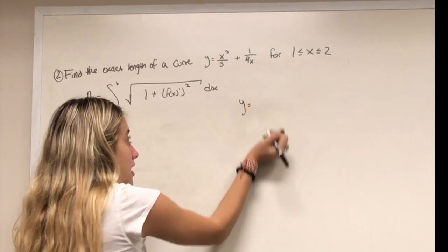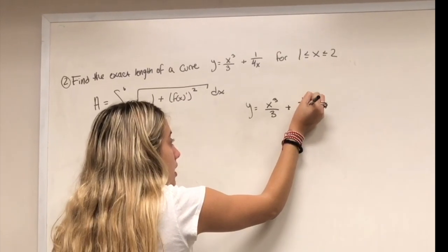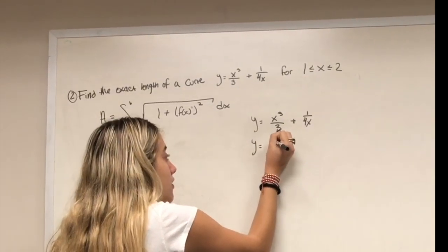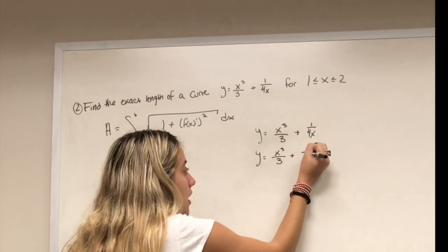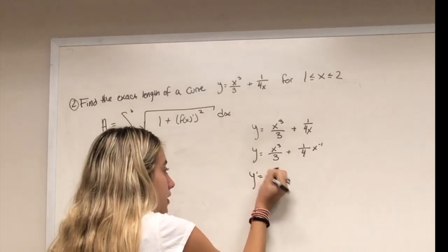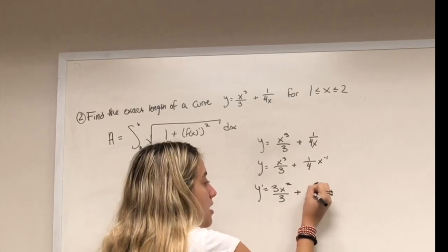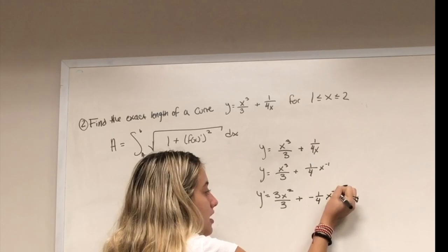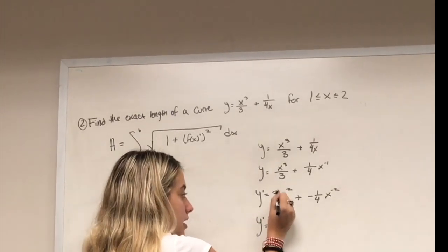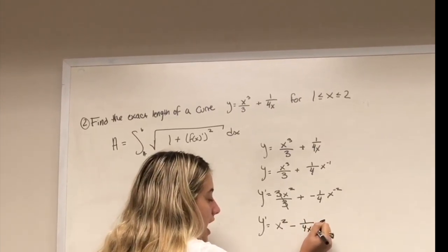Find the derivative of y = x³/3 + 1/(4x). Rewrite 1/(4x) as (1/4)x^(−1) to make differentiation easier. The derivative is 3x²/3 + (−1/4)x^(−2), which simplifies to y' = x² − 1/(4x²).